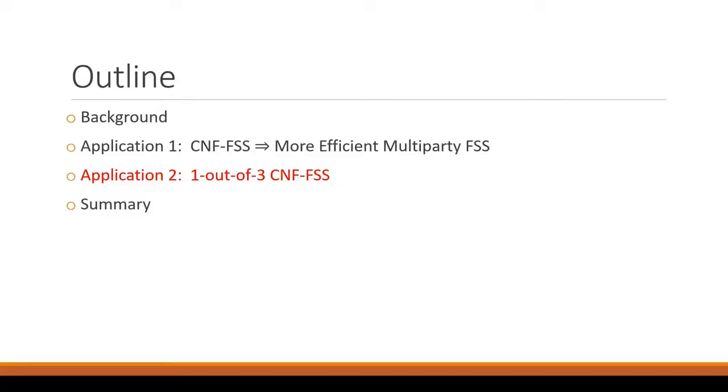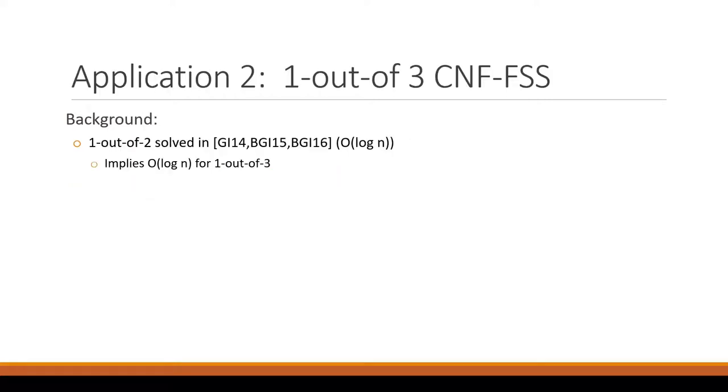For our second result, we'll be focusing on the T equals one, P equals three case, and construct a one out of three CNF FSS protocol. So as I mentioned before, the one out of two case was totally solved by the original papers. They achieved the optimal logarithmic communication in N for key gen. And we observed that this also implies this can be trivially extended to more parties with the same threshold. So you could also get a one out of three protocol with log N communication.